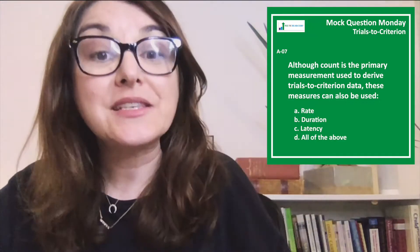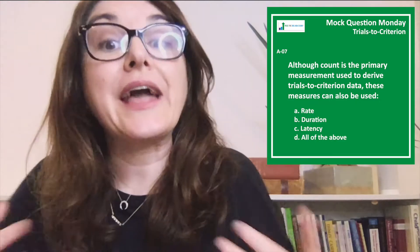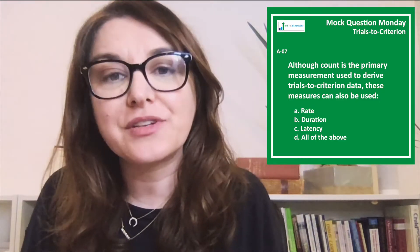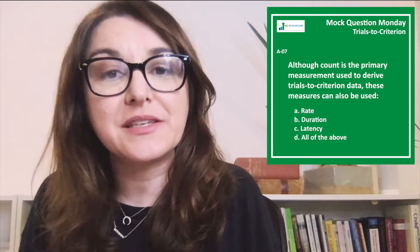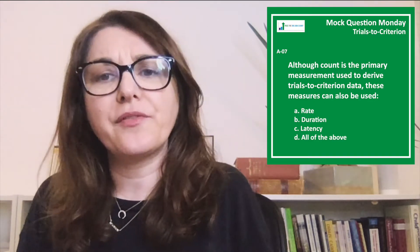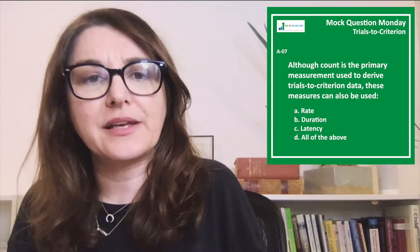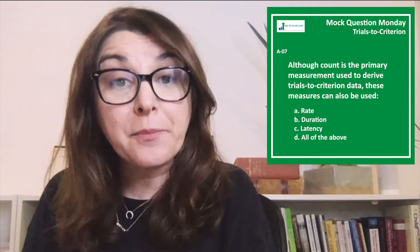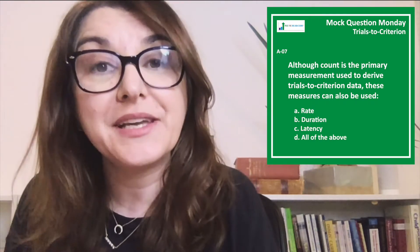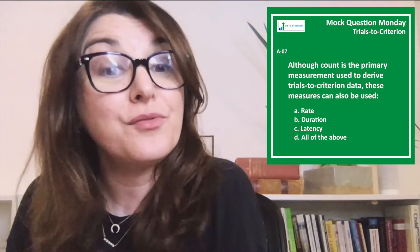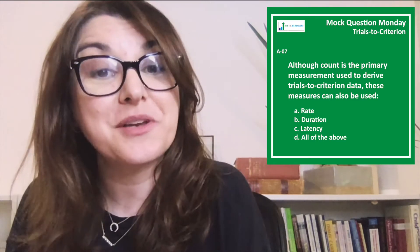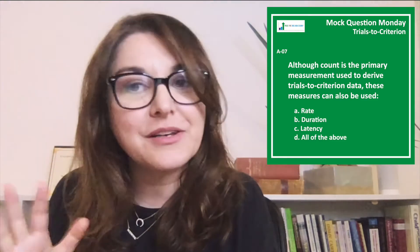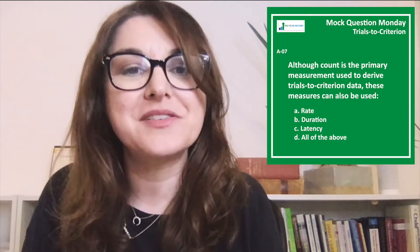So for rate, we could look at how many trials were needed before someone exhibited a certain level of fluency, meaning could answer a certain number of questions correctly in a given period of time. For example, how many memorization trials were needed before you can recite a certain number of task list items correctly within a minute, or some other period of time.